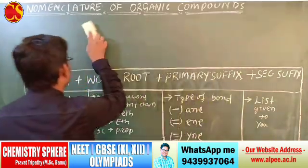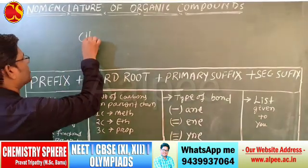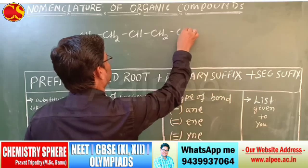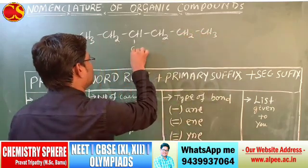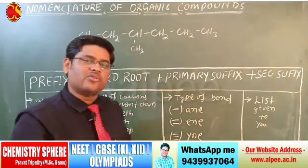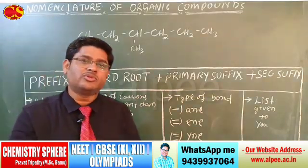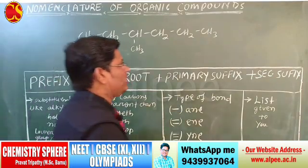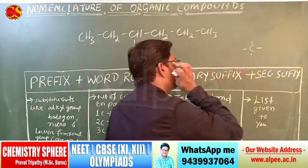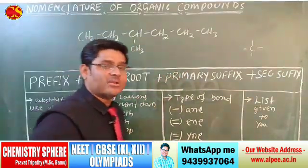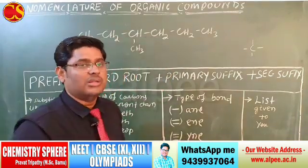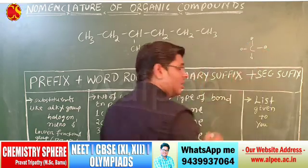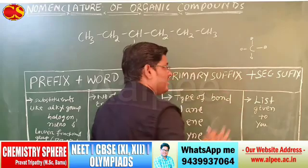Now I will give you some examples of how to write the IUPAC names of organic compounds. Let us take the chain: CH₃–CH₂–CH–CH₂–CH₂–CH₃ with a CH₃ branch. This is a carbon chain and one hydrocarbon. Carbon is tetravalent in nature, meaning its valency is four and it can combine with four elements.